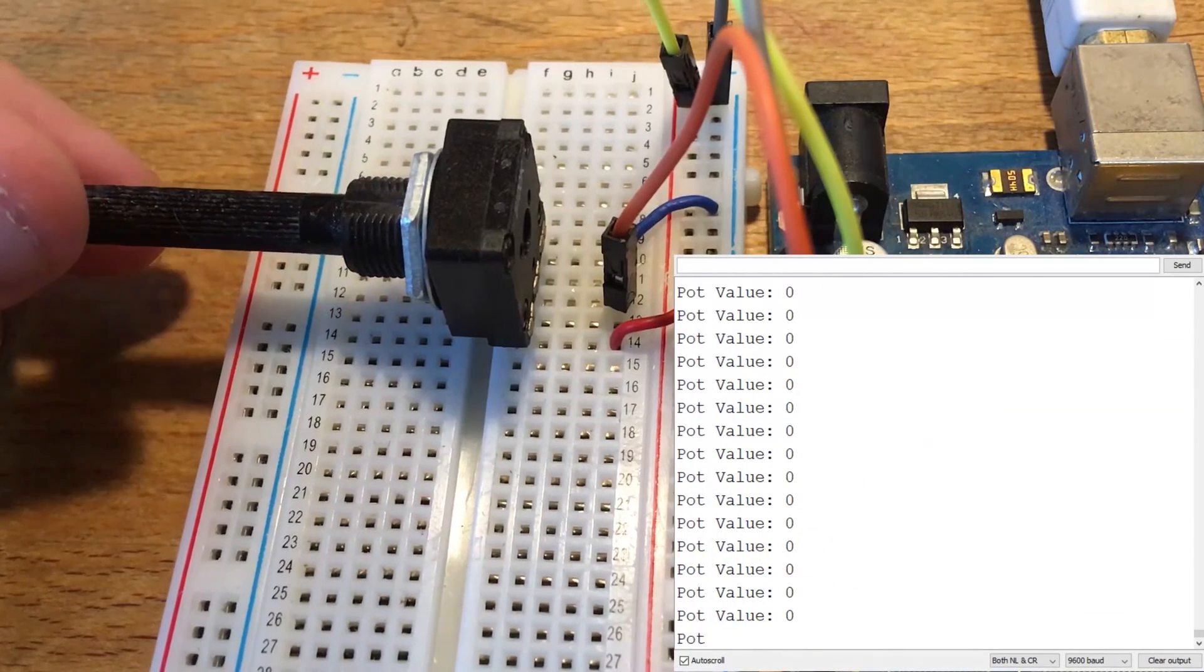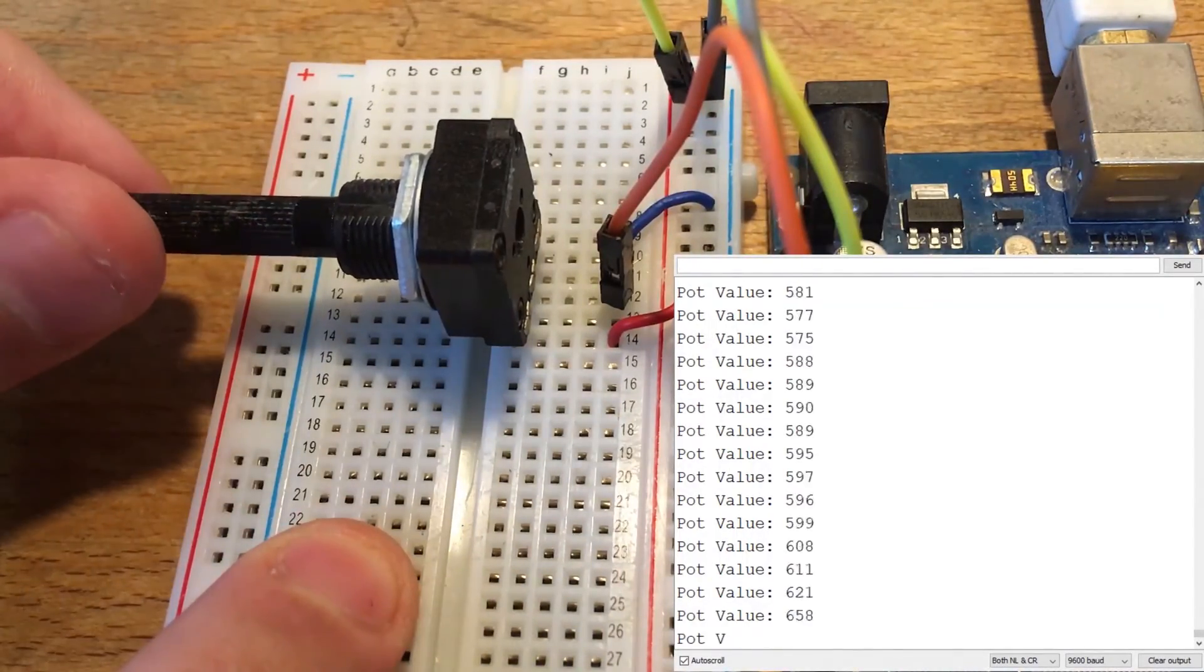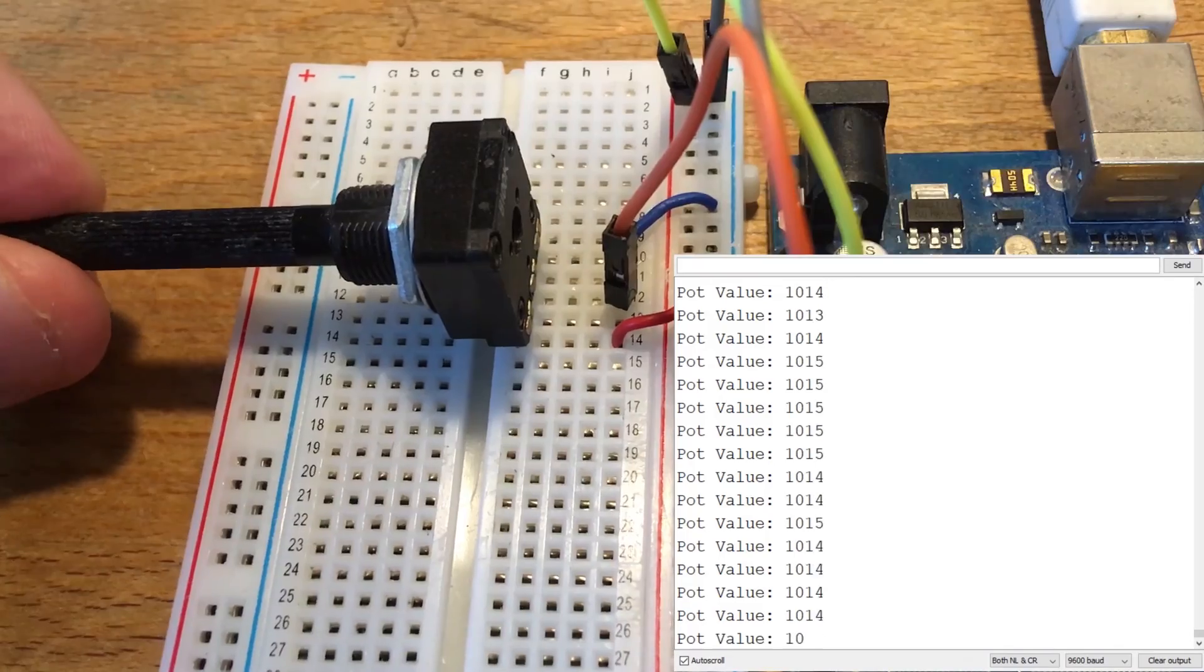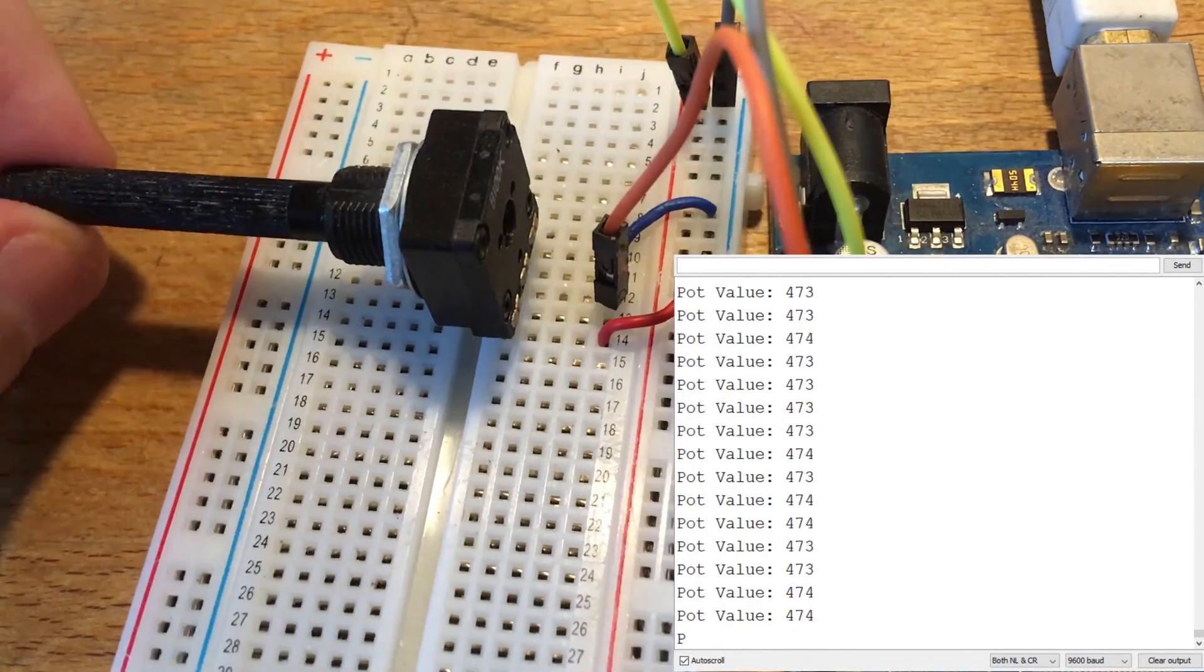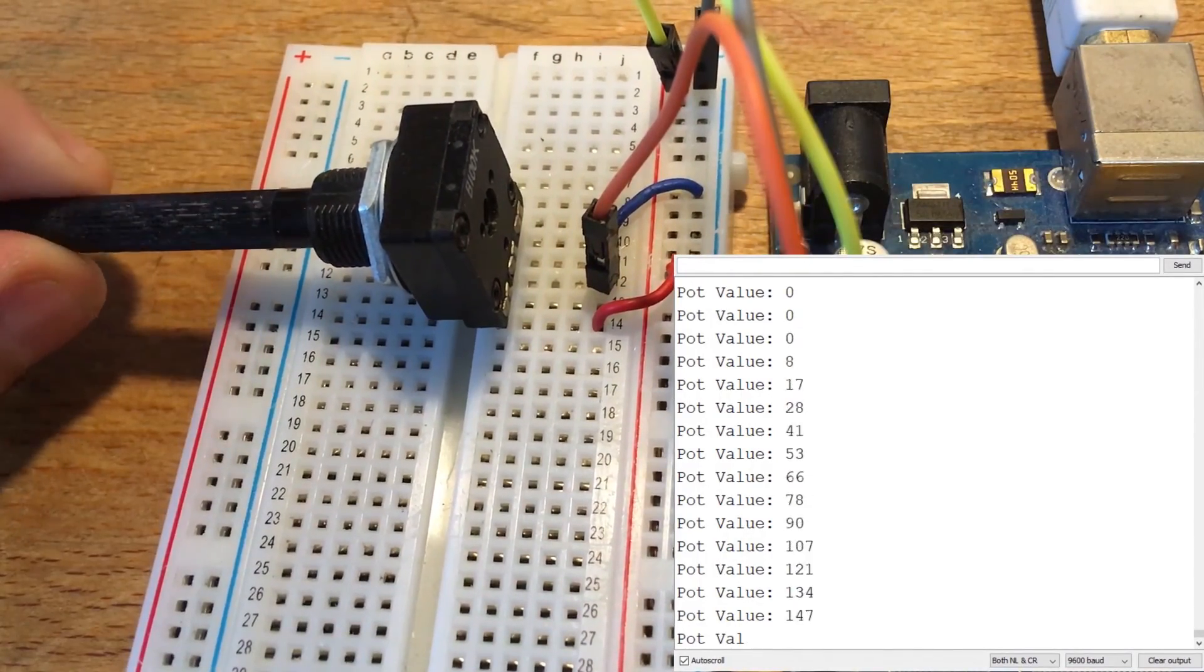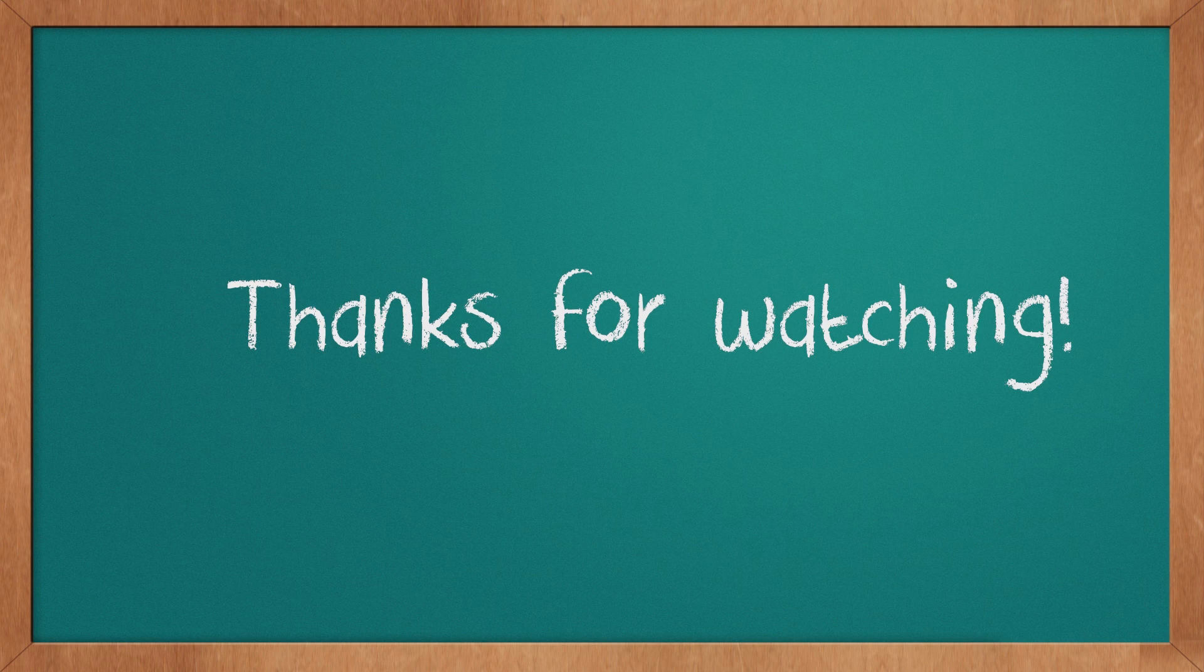As you can see, the Arduino is printing the value zero because my pot is at the max position. When I turn the knob, it changes the internal resistance, increasing the output voltage. This value is read by the Arduino's ADC and then printed by serial to the computer. Thanks for watching and don't forget to subscribe!